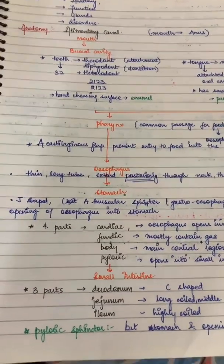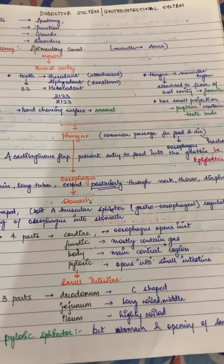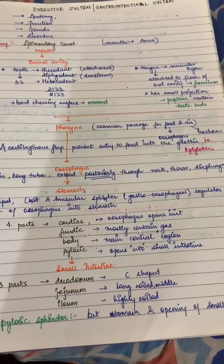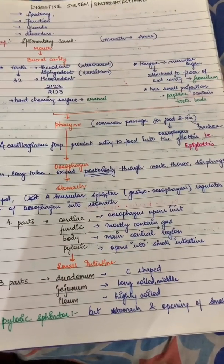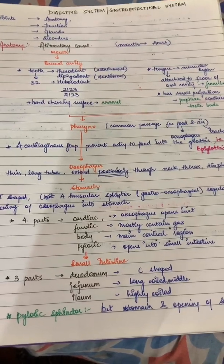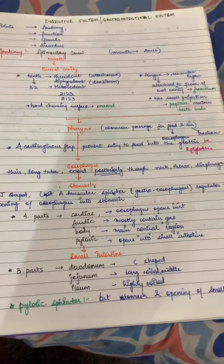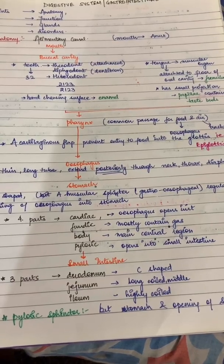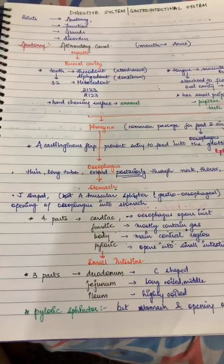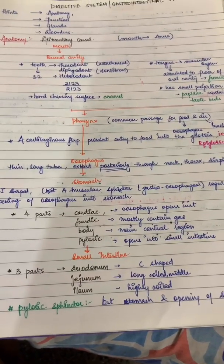The esophagus is a thin long pipe extending posteriorly through the neck, thorax, and diaphragm. Anatomically, the esophagus lies in front of the vertebrae. After the esophagus comes the stomach, which is J-shaped and muscular. There is a sphincter called the gastroesophageal sphincter, which is always closed and only opens when food arrives.